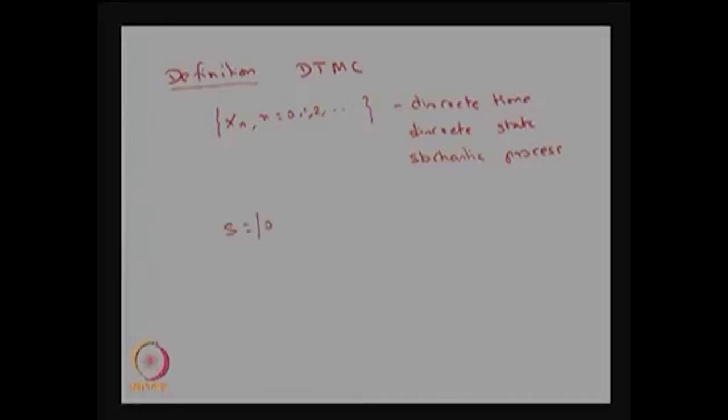S is equal to {0, 1, 2, ...}. Unless otherwise mentioned, you can always assume that the state space S consists of the elements 0, 1, 2, and so on. Even if it takes other values, you can always make a one-to-one correspondence and make the state space S equal to {0, 1, 2, ...}.